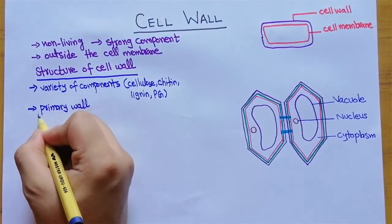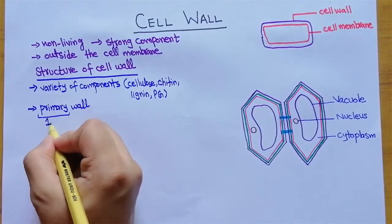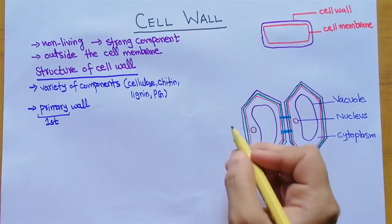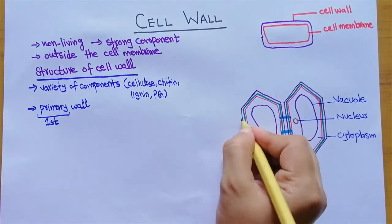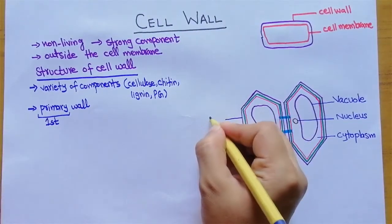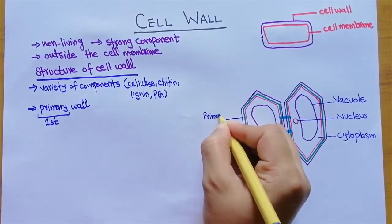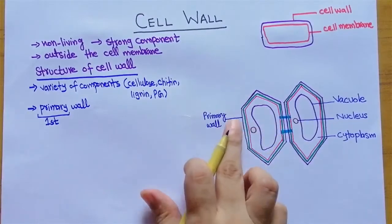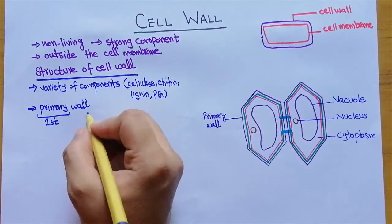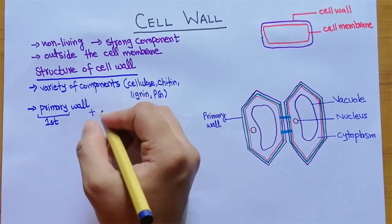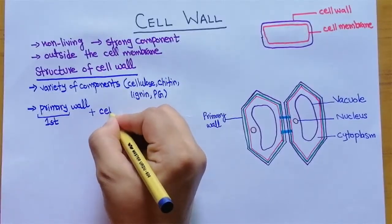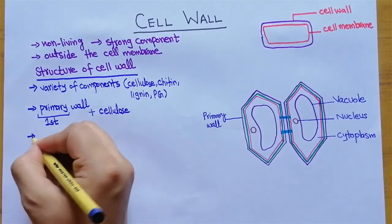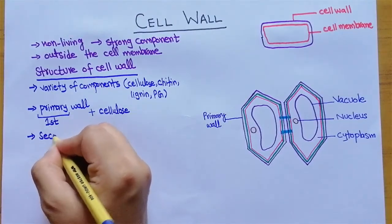Regarding cell wall structure, it has a primary wall. The word primary means first — in other words, the outermost layer. Here in purple, this is the primary wall. This primary wall is actually made up of cellulose.